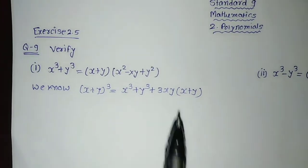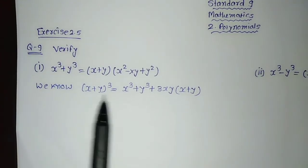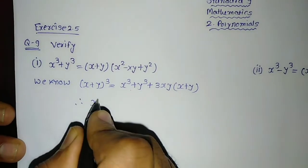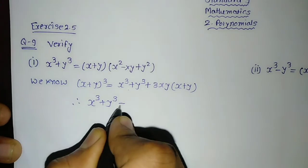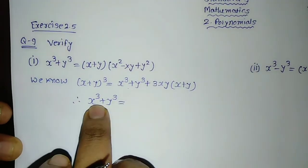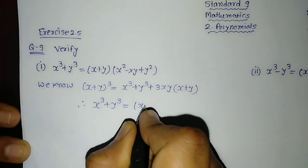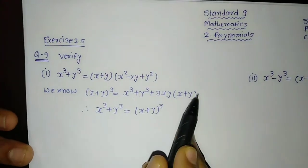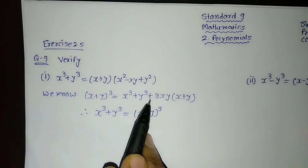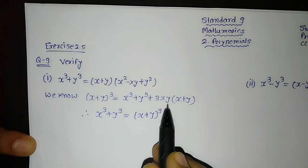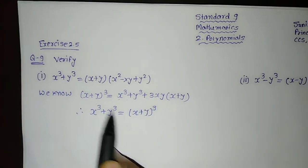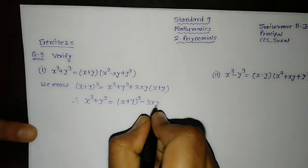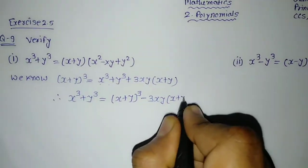If I bring this term to the other side, x cube plus y cube is equal to x plus y whole cube. As I have taken the 3xy(x+y) term to this side — since it was plus, at the other side it goes minus — so: x cube plus y cube is equal to x plus y whole cube minus 3xy into bracket x plus y.